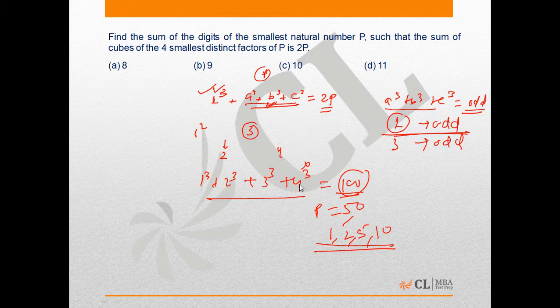Now change the value of the fourth smallest factor, that is 4. The next possible value for the same would be 6. And when we add 1³ + 2³ + 3³ + 6³, it comes out to be 252, and therefore the value of P will be 126, half of 252.